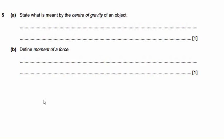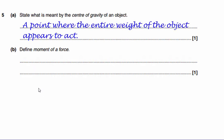Question 5 begins with a couple of straightforward definitions. The first one here, to state what is meant by the center of gravity of an object. Well, the definition for that would be a point where the entire weight of the object appears to act.